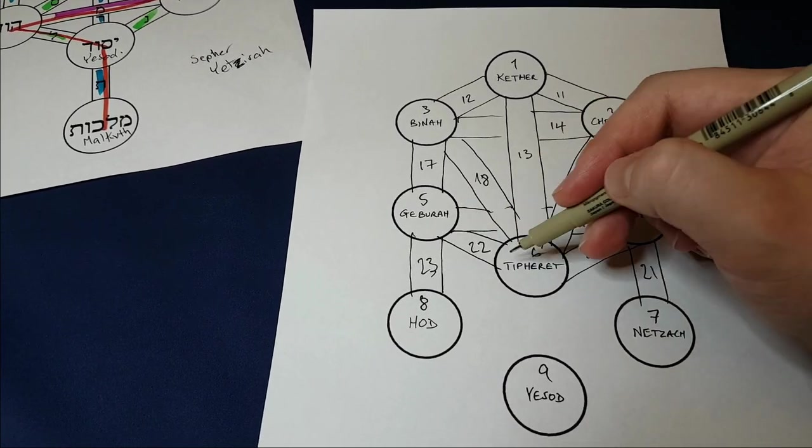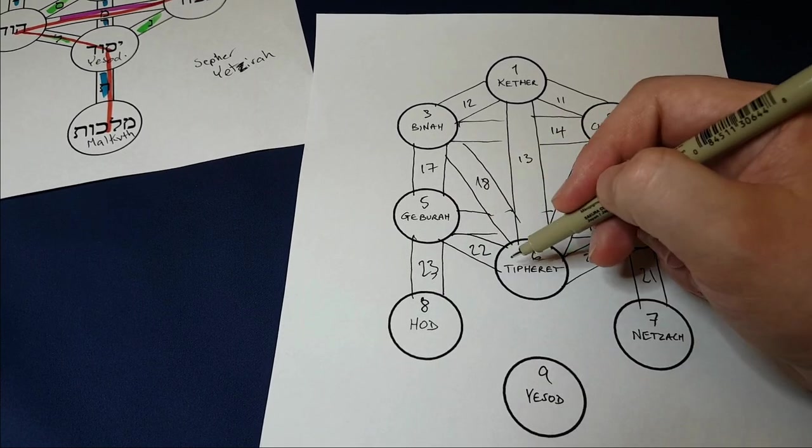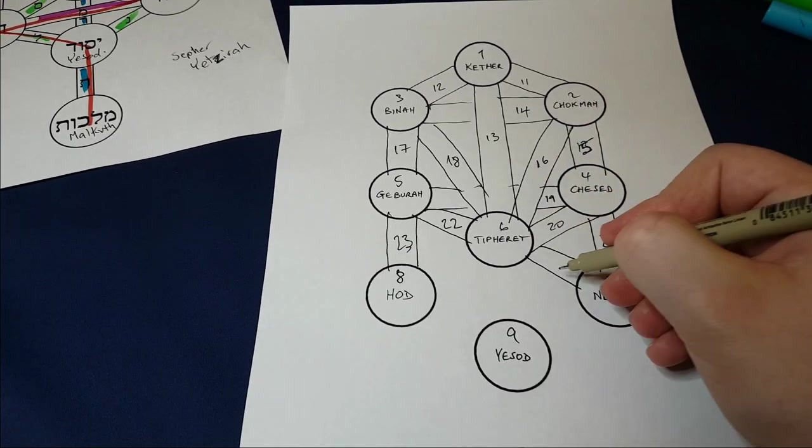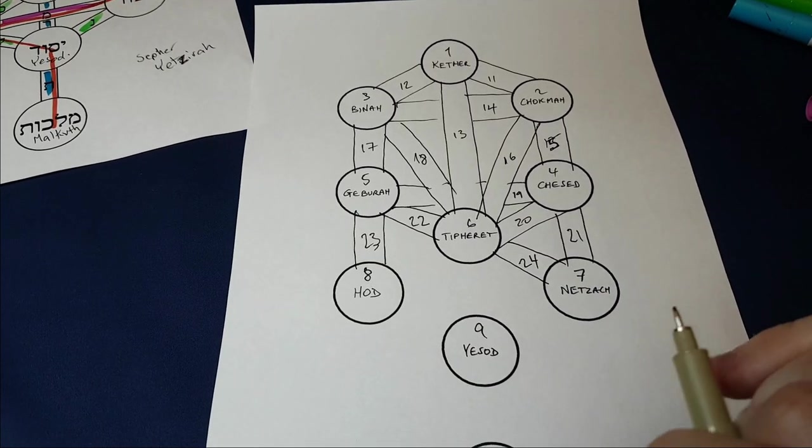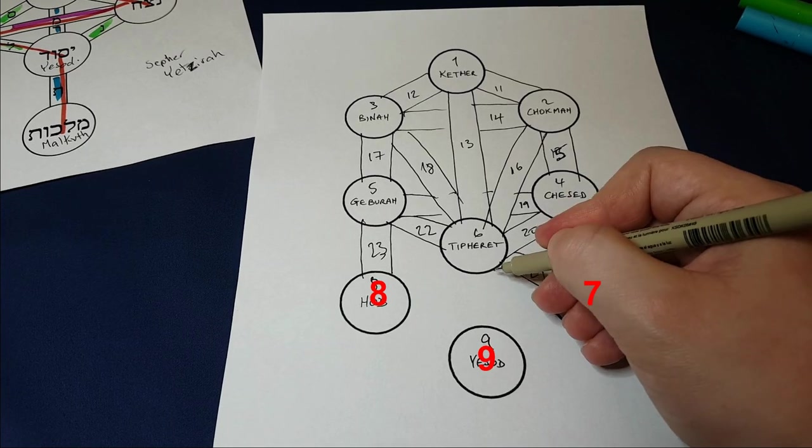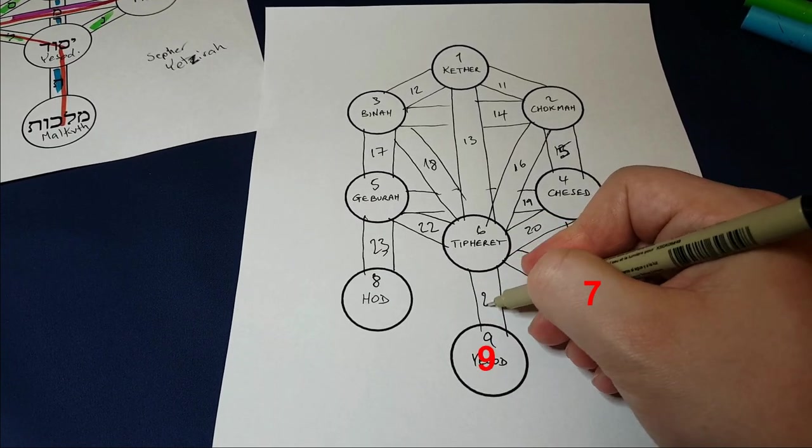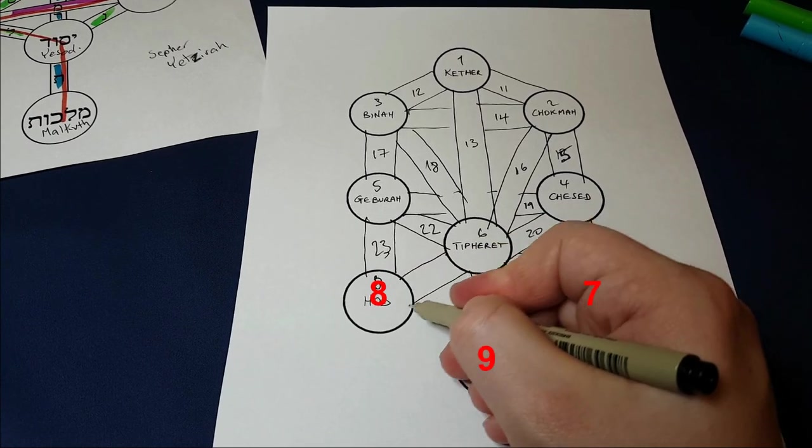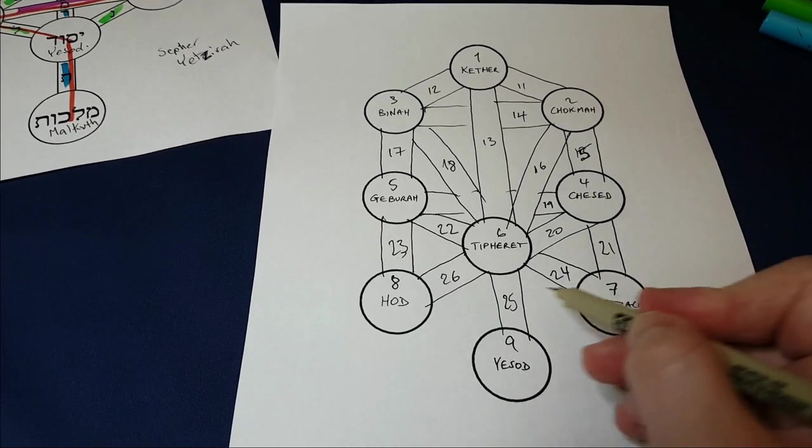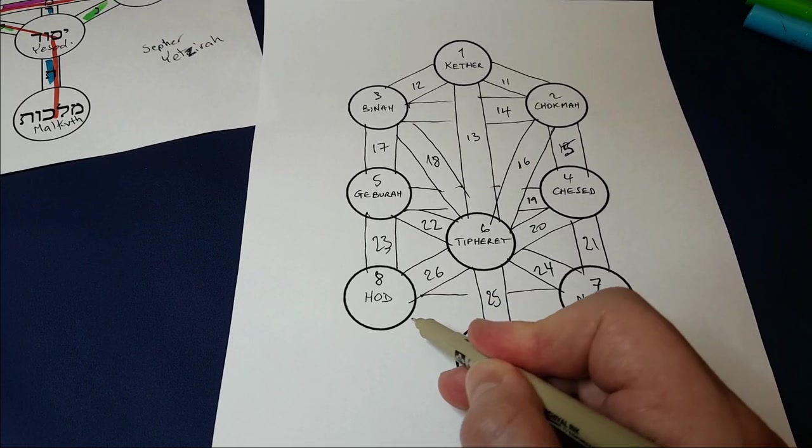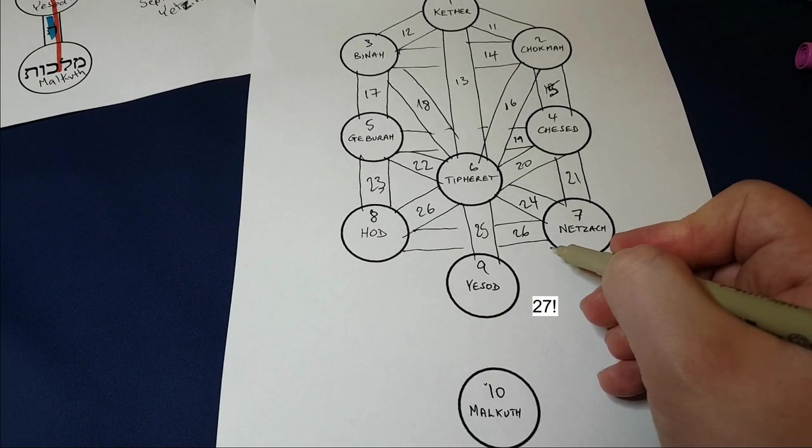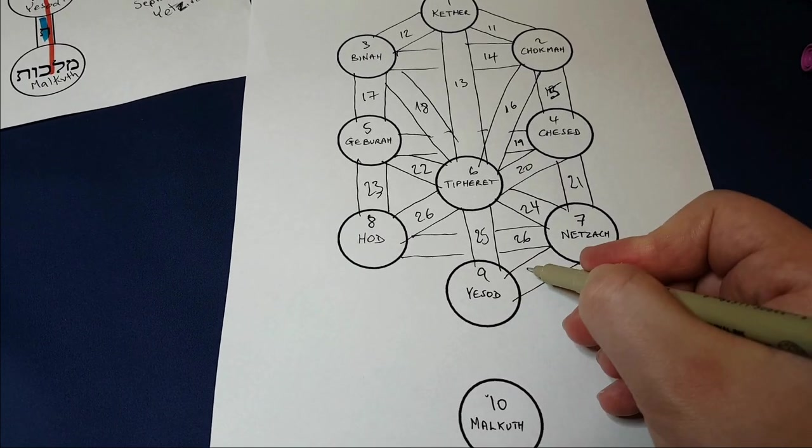Then after that is linked to everything that it could be linked to. Then you go to the next one, 5. And that's linked to Tiphareth. So that would be path number 22. And then path number 23. And then, so, yeah, Geburah is now also linked to everything that it could be linked to. So after 5 is 6. 6 gets linked to Netzach. 24. And this is where the logic breaks down just for one path. Instead of going 24, 25, 26, it goes 24, 25, 26. Why? I don't know. I just don't know.